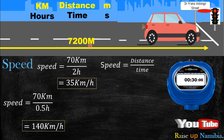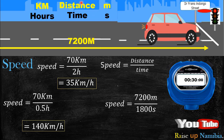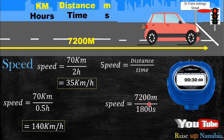Now let's look at another scenario: Mike travels 7200 meters in 30 minutes. Notice that the distance is in meters, so the time must be in seconds. Since 30 minutes is not in seconds, we convert: 30 minutes equals 1800 seconds. So 7200 meters divided by 1800 seconds gives you 4 meters per second — and that's your final answer.